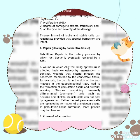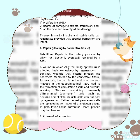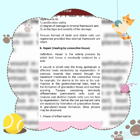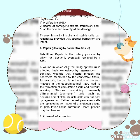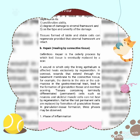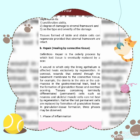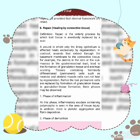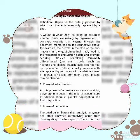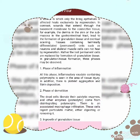Tissue containing terminally differentiated permanent cells such as neurons and skeletal muscle cells cannot heal by regeneration. Rather, the lost permanent cells are replaced by formation of granulation tissue. In granulation tissue formation, three phases may be observed. The first is the phase of inflammation.